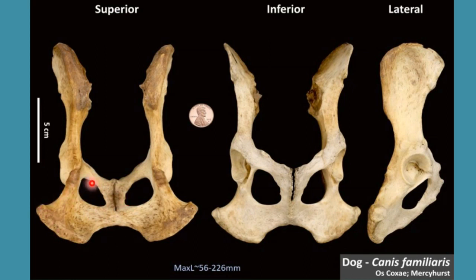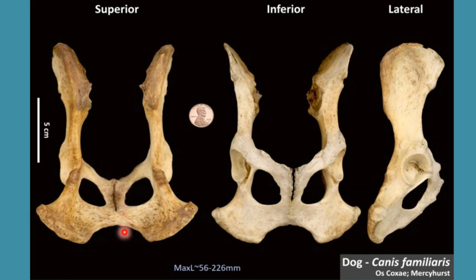Now let's talk about pubis. Pubis is a small bone which is a triangular plate present at the anteromedial aspect of the pelvic floor. It contains two surfaces: one is the dorsal surface and the other is the ventral surface.